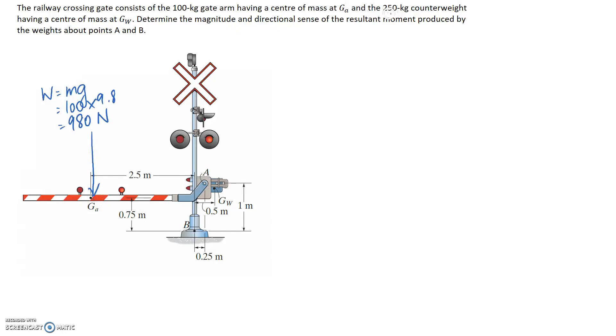The other one we're told is 250 kg and its centre is at G_W, so that's this in here. Again, we can work out how much weight that corresponds to by taking the mass and multiplying by gravity. So it's going to be 250 times 9.8, and this one comes out to be 2450 newtons.